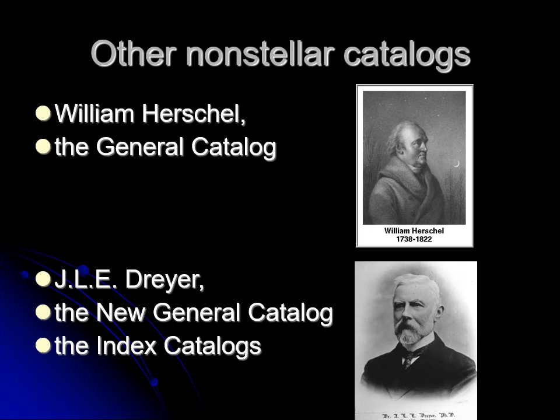By the end of the 19th century, telescopes had gotten so good that you could see far more than the General Catalog contained. Johan Dreyer established what we now call the New General Catalog, or NGC, which has close to 10,000 objects listed in it. Shortly after it was published, new telescopes revealed another 10,000 objects.